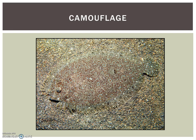Flounders can change color depending on the type of sand. As larvae, they have an eye on each side of their head, but as they mature, one eye migrates or moves. This is a physical adaptation that allows them to lie on the bottom of the ocean and prevents them from becoming an easy meal.